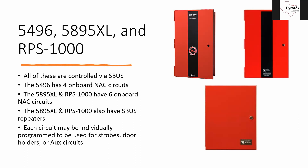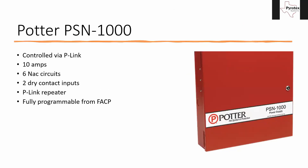The last power supply I want to talk about is the Potter PSN-1000. This is a 10-amp unit controlled over P-Link, which is just like SBUS. There are six NAC circuits on it, it has a P-Link repeater just like the other six-circuit Silent Night panels, and it's fully programmable from the FACP. One difference from the Silent Night panels: it has two dry contact inputs — kind of like built-in monitor modules, which is neat. We don't do a lot of Potter systems, but if you ever run across one, there is an intelligent power supply for it.